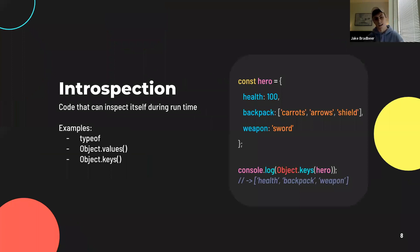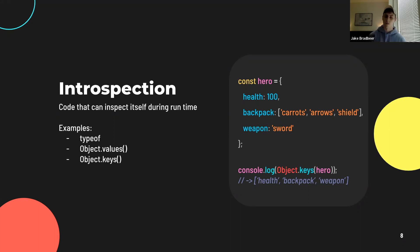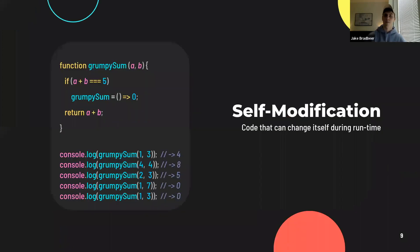First, we have introspection, which is when code can inspect itself during runtime. These are going to look very familiar — the typeof operator, object.values, object.keys, among many others you're already using. As an example on the right-hand side, we're declaring an object 'hero' with a health, backpack, and weapon property. If we invoke object.keys passing in our hero object, we receive an array of all the keys on that object. Therefore, at runtime, we are learning something about our code.